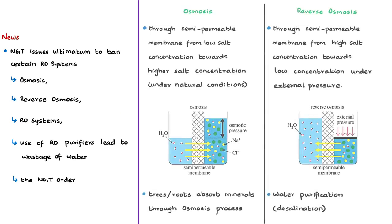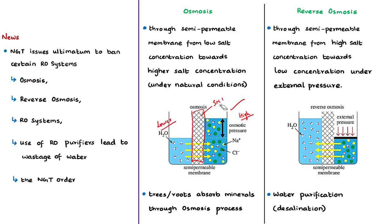First let us see what is meant by osmosis. Consider an environment where there are two water mediums. In one water medium the salt concentration is low and in the other the salt concentration is high, and both these mediums are separated by a semi-permeable membrane. Osmosis is a process where water moves through a semi-permeable membrane from an area of low salt concentration into an area or region with higher salt concentration. Water moves in such a way to equalize the concentrations on both sides under natural conditions. Trees and roots absorb minerals through the osmosis process.